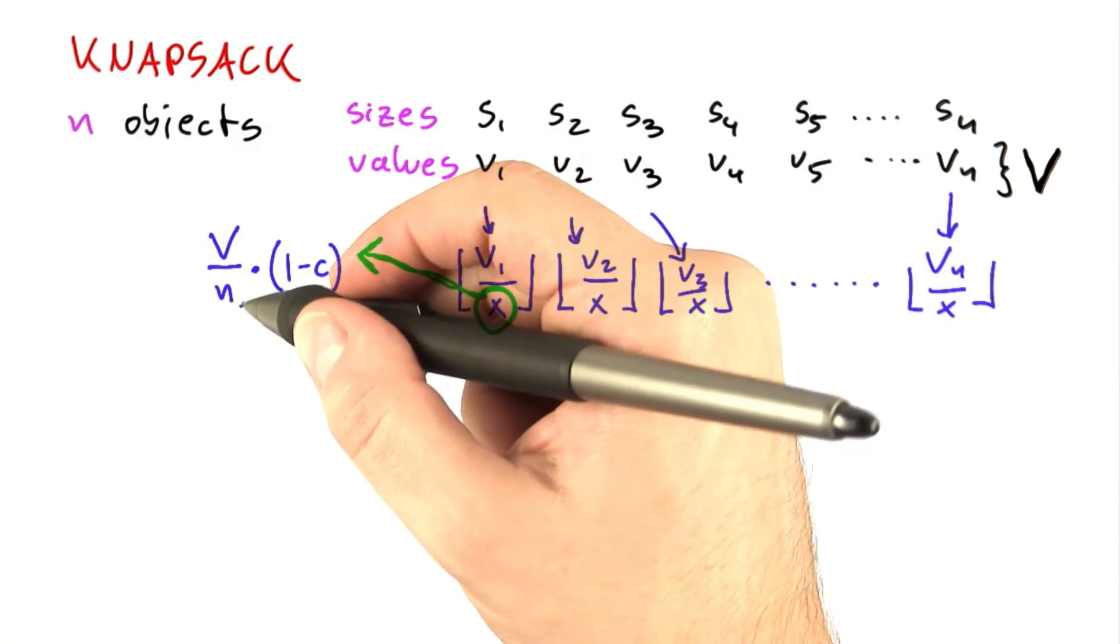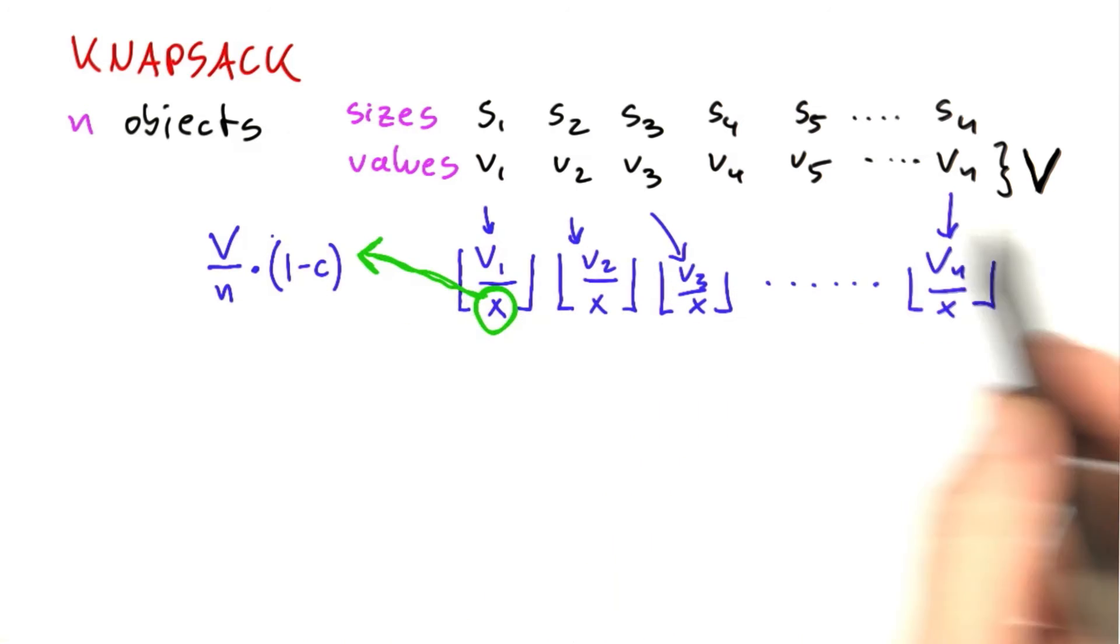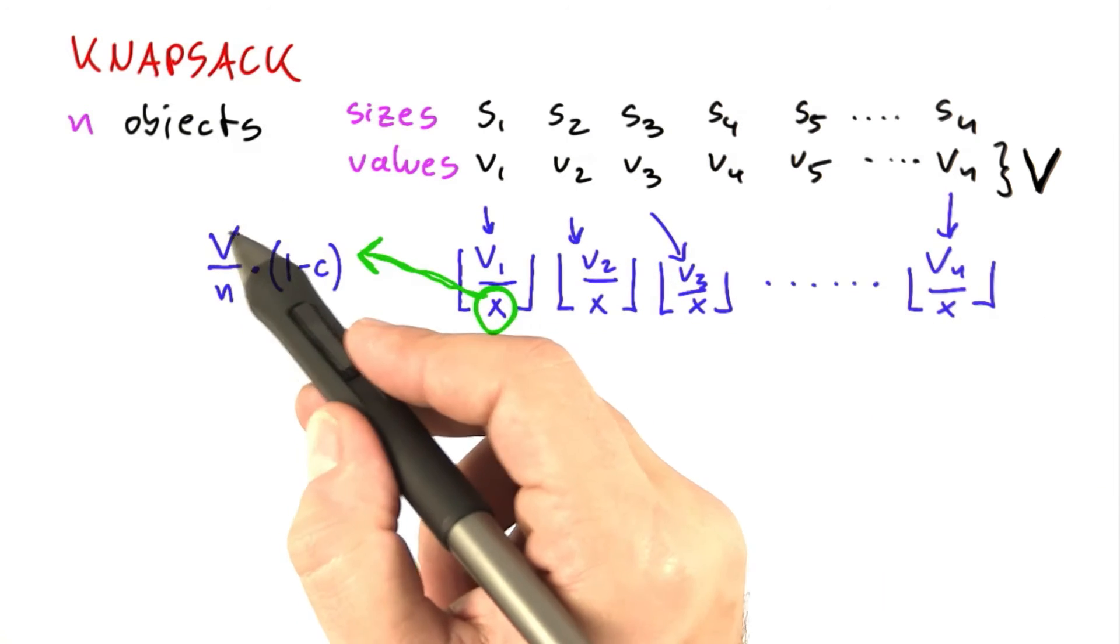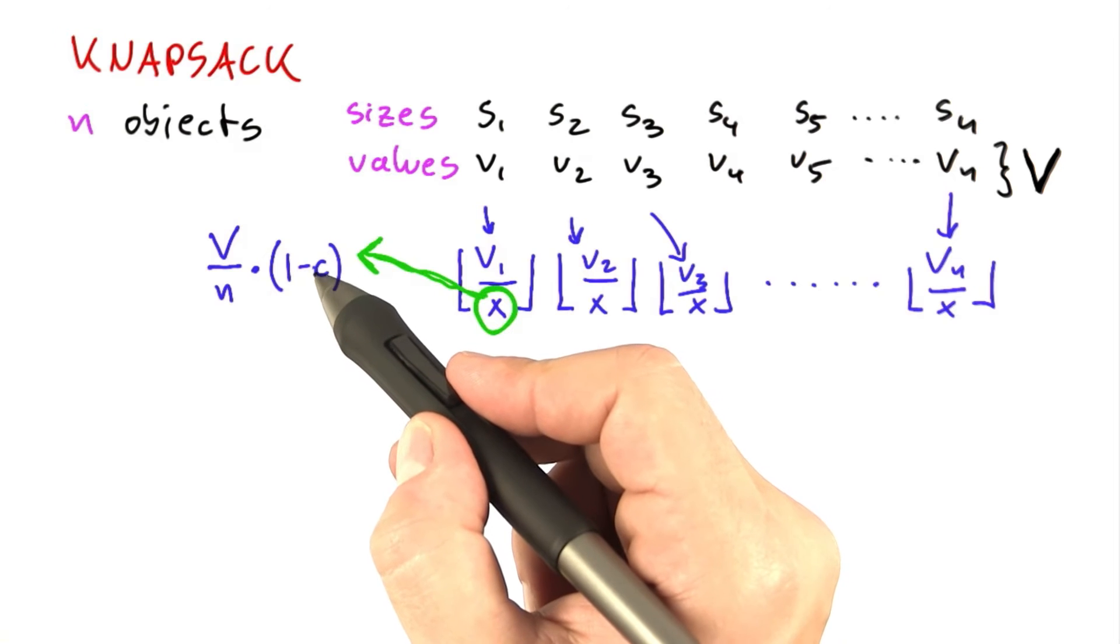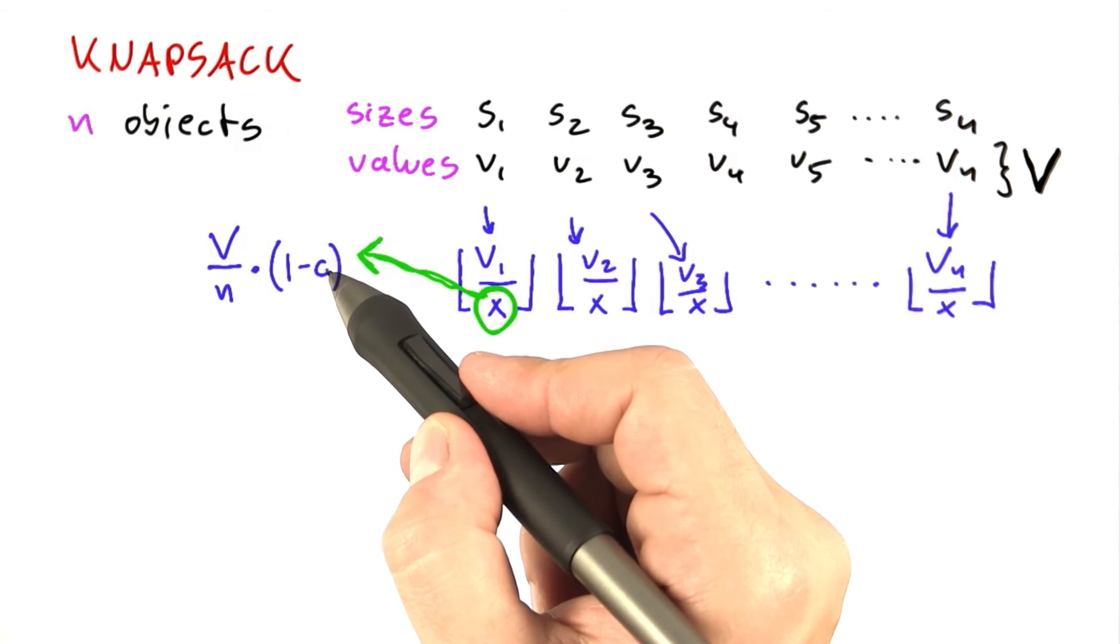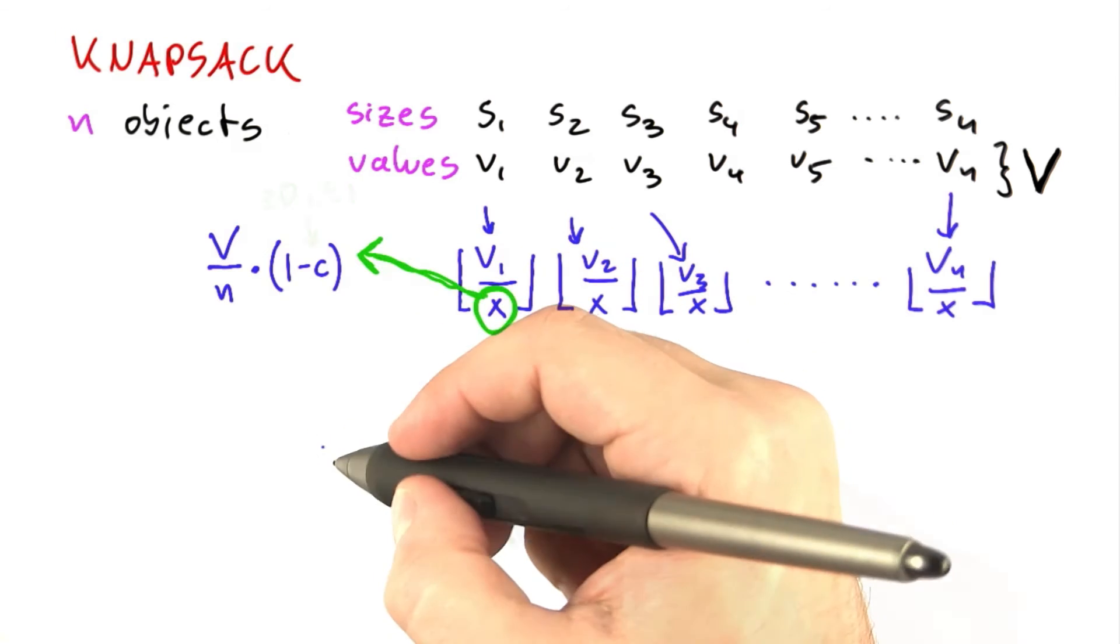Now you already know most of the constants here, so you know n, n is the number of objects, and v is the sum of all values. Now, c is some value I'm not yet going to specify to you. We'll just say for now that c lies between 0 and 1.